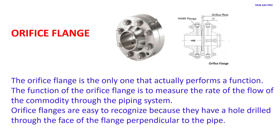The orifice flange is the only one that actually performs a function. The function of the orifice flange is to measure the rate of flow of the commodity through the piping system. Orifice flanges are easy to recognize because they have a hole drilled through the face of the flange perpendicular to the pipe.